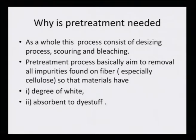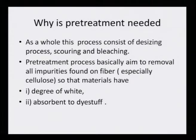Why is pretreatment needed? The process consists of desizing, scouring, and bleaching. Pretreatment is basically aimed at the removal of all impurities found on the fiber, especially cellulose fibers, so that the material has a degree of whiteness and is a good absorbent of the dye stuff. This is what we had learnt when looking at the scouring and bleaching and desizing of cotton — to remove all impurities adhering on the surface which can hamper the dye uptake.